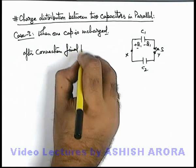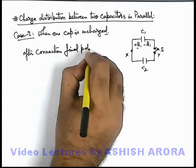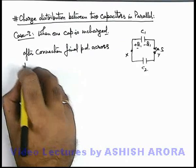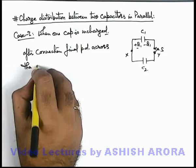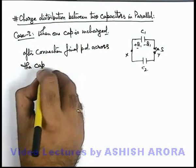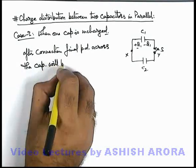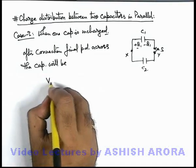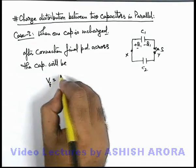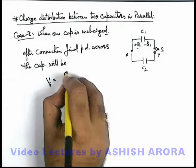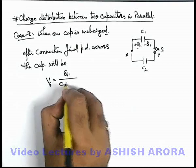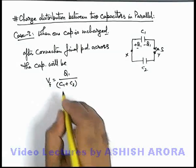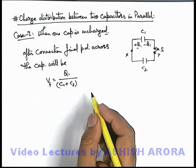After connection, the final potential difference across the capacitors will be: since the total charge is Q1 and the capacitance is C1 plus C2, it will be Q1 divided by (C1 plus C2).